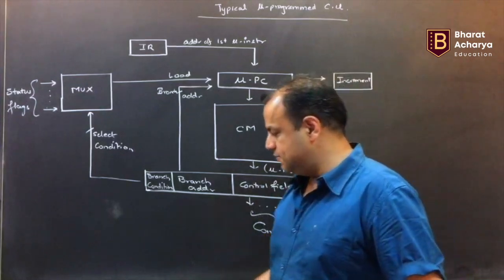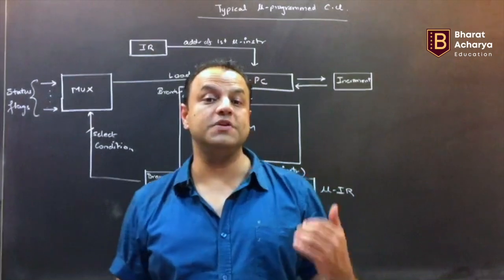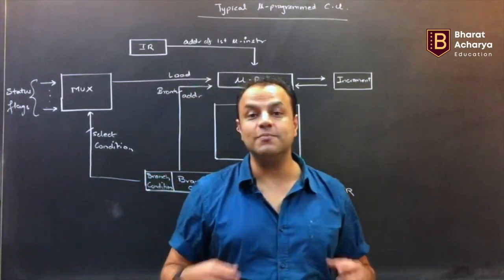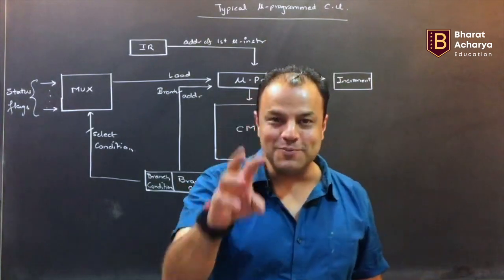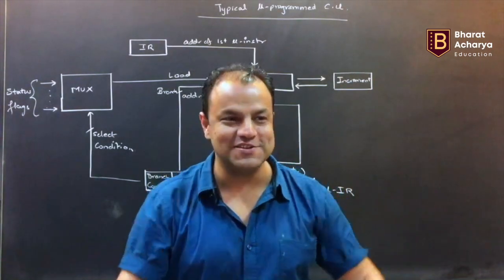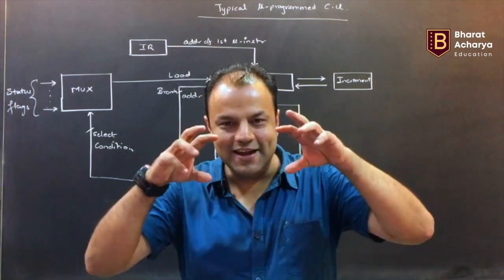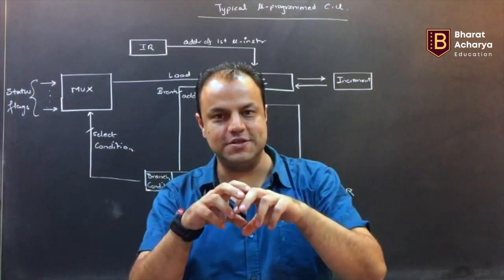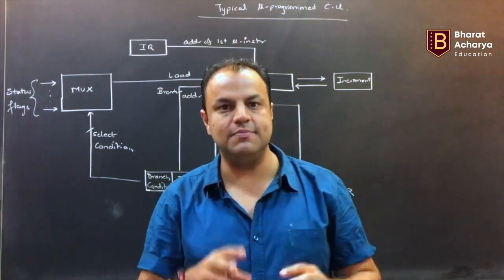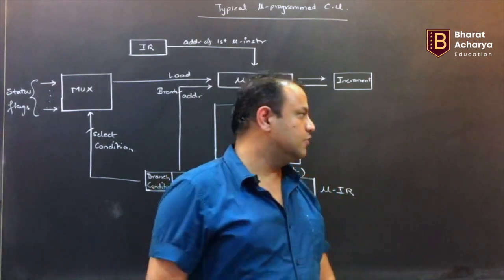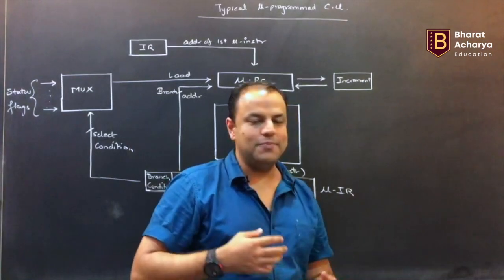A program is a set of instructions. Every instruction needs a set of micro-operations. To perform the micro-operations you need control signals. Those control signals are produced by micro instructions. The set of micro instructions required to produce the control signals for a particular instruction is called the micro program of that instruction. That micro program is stored in memory called control memory, which holds micro programs for every instruction.